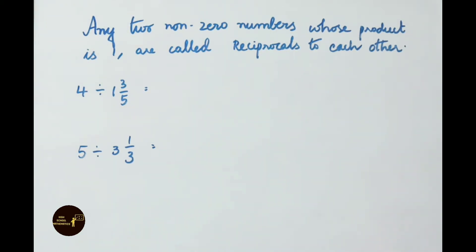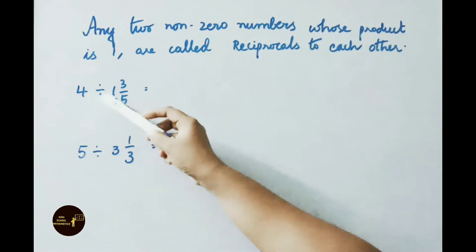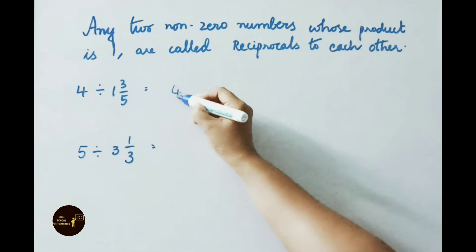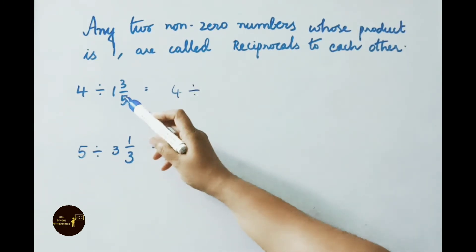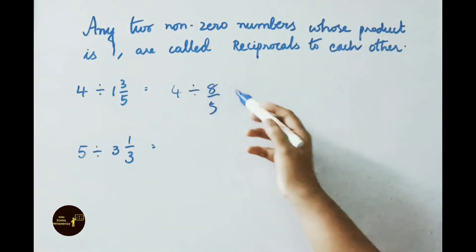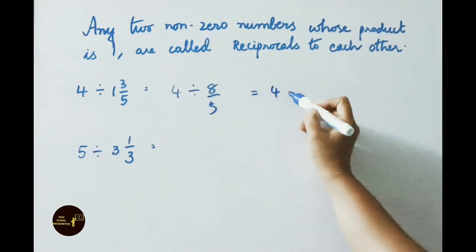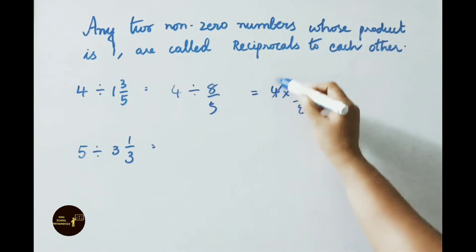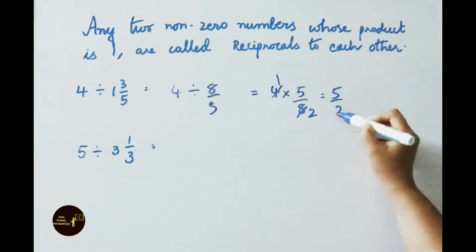Let us see division of fractions — a few more examples. See the first one: 4 divided by 1 and 3/5. First, we have to convert the mixed fraction to improper. 5 × 1 = 5, 5 + 3 = 8. So write down 4 divided by 8/5. That equals to 4 × reciprocal of 8/5, which is 5/8. 4/8 simplifies: 5/2.